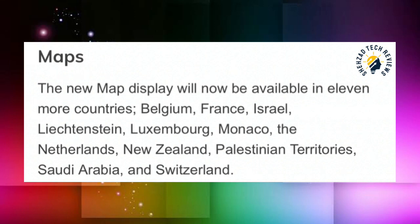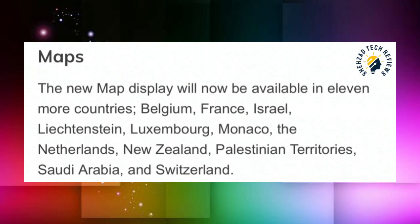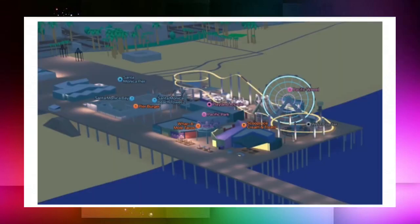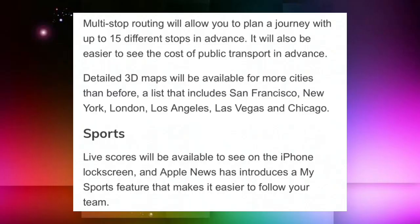There is a new feature for Maps — you can see a lot of new map displays. Support is being added for more than 11 countries, including Belgium, France, Israel, Monaco, Netherlands, New Zealand, Palestine territories, Saudi Arabia, Switzerland, and others. You can see a new map display with some changes, including a 3D detailed map view and multi-stop routing with up to 15 different stops on the map.